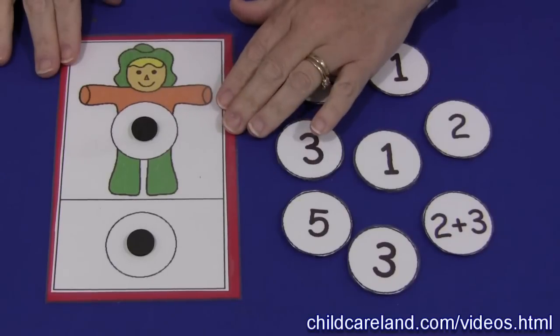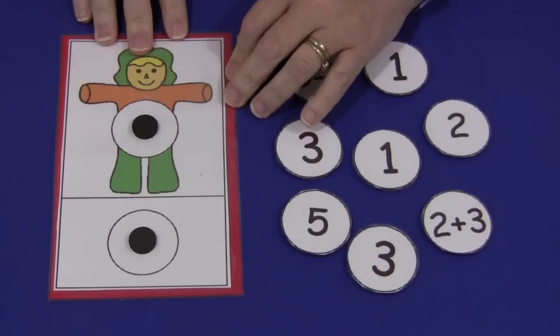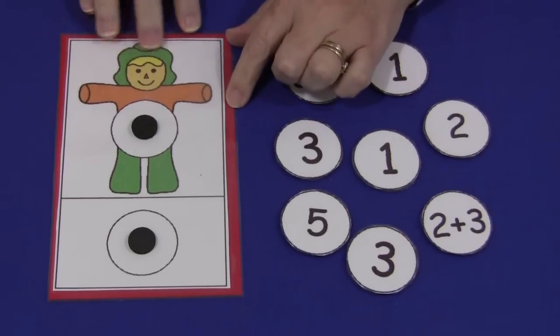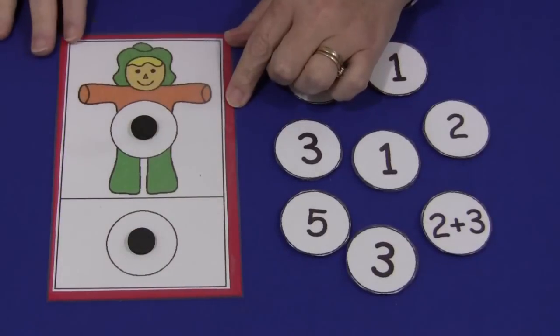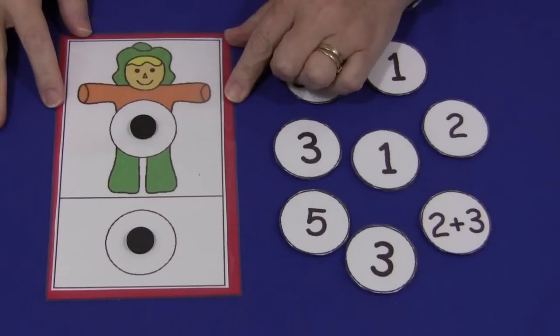You would just simply print them off on card stock paper. For the scarecrow number mat, I've glued it onto a piece of colored card stock paper and trimmed the edges around so it has a border, and then I've laminated it.